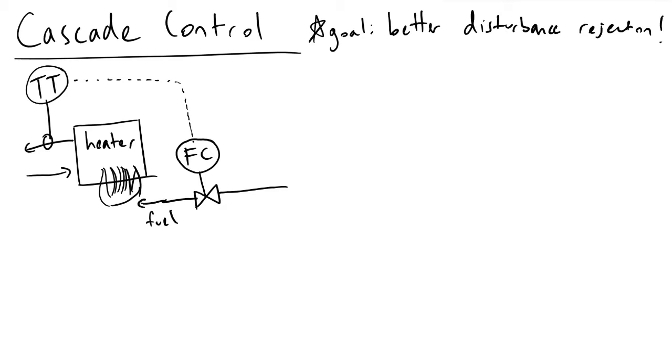In this diagram that I've constructed here, we have a temperature transmitter labeled TT, and it is feeding information, which is this dotted line, to a flow controller which controls the fuel flow rate into our heater to heat up the water.